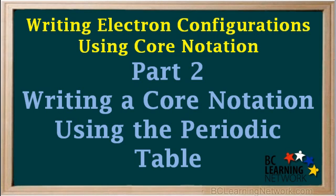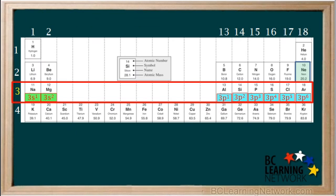This video will show you how to write core notation electron configurations using the periodic table. Recall from part 1, the noble gas core for elements in period 3 is neon, and the endings of the configurations are shown on the table here. Now we'll see how this can be used to write the noble gas core notation for any element in period 3.